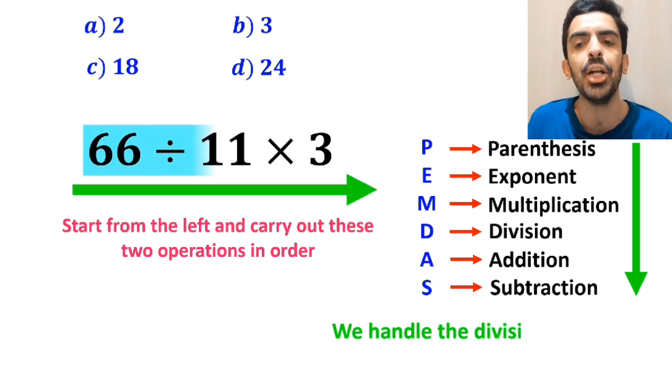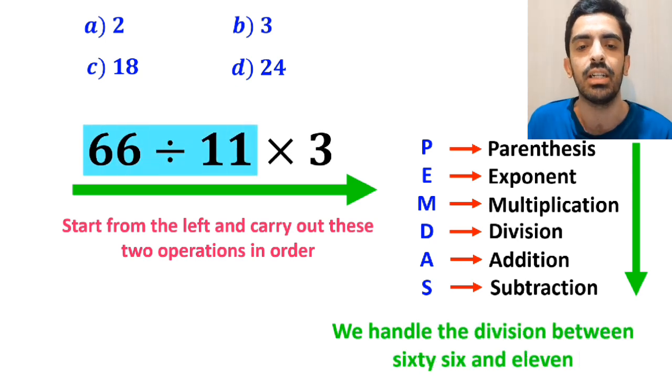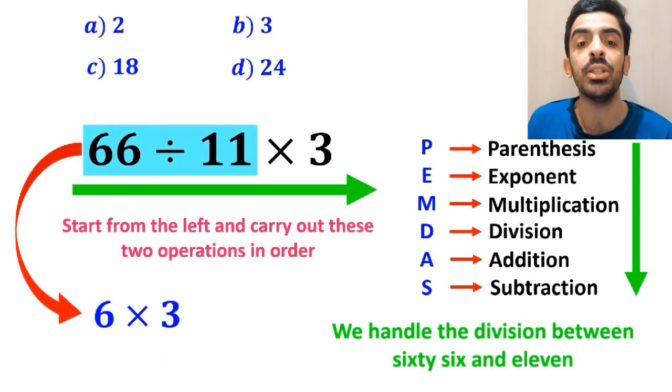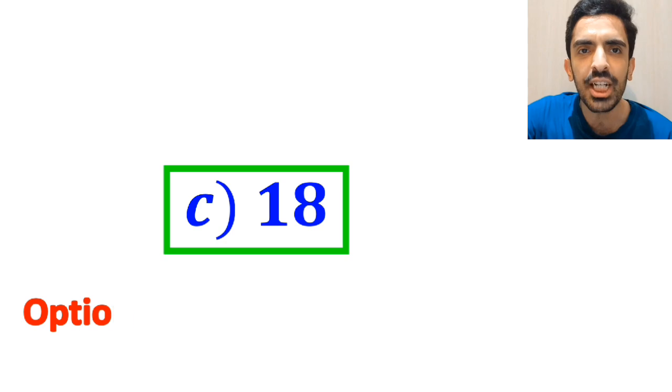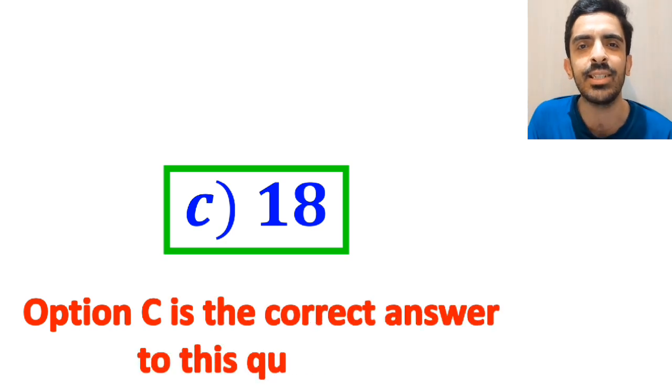So first we handle the division between 66 and 11, which simplifies this expression to 6 multiplied by 3. And finally, we get the answer 18. Therefore, option C is the correct answer to this question.